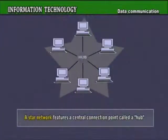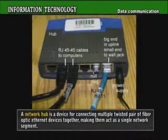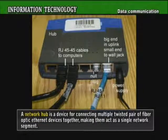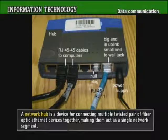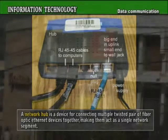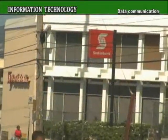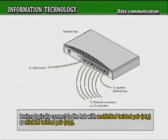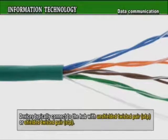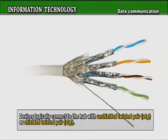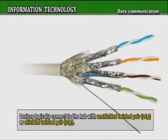A star network features a central connection point called a hub. A network hub is a device for connecting multiple twisted pair or fiber-optic Ethernet devices together, making them act as a single network segment. Many office networks use the star topology. Devices typically connect to the hub with unshielded twisted pair (UTP) or shielded twisted pair (STP).